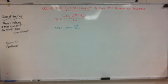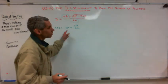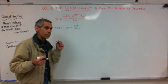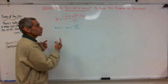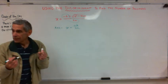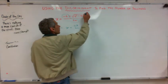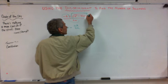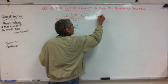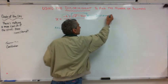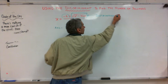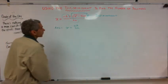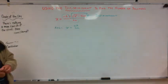You guys with me? Does that make sense? Isn't that interesting? So as long as you've memorized the quadratic formula, you kind of already know that negative B over 2A part. Now, the discriminant is this part right here — B squared minus 4AC. That is the discriminant.